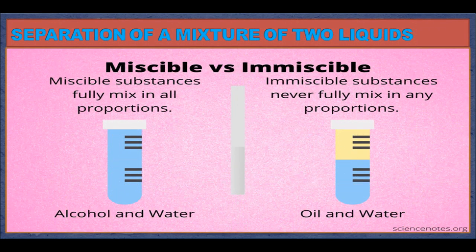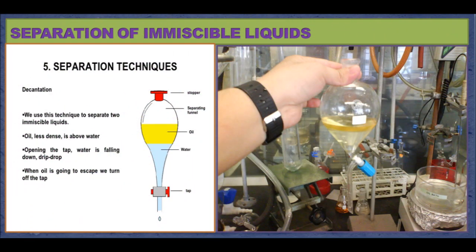Separation of mixtures of two liquids. Milk and water mix well with each other — such liquids are called miscible liquids. Oil and water, on the other hand, do not mix; they form two separate layers with oil floating on top even after vigorous stirring. Such liquids are called immiscible liquids. Immiscible liquids can be separated using a separating funnel: the mixture is placed in the funnel and left undisturbed. The heavier liquid (water) collects at the bottom and the lighter liquid (oil) at the top. A beaker is placed below, and the stopper is opened to let the bottom layer flow out, then closed when the top layer reaches the stopper.